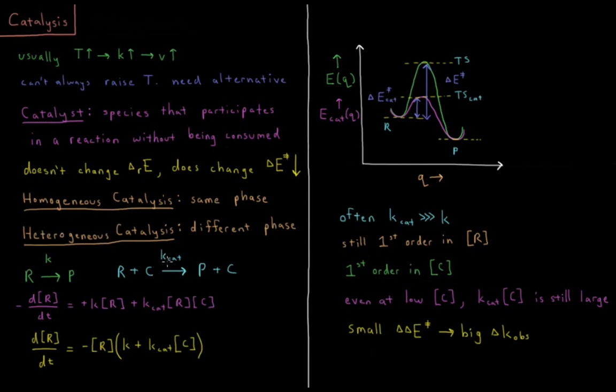So let's look at how this affects the rate when we have this alternative pathway. So our reaction rate, which is minus d[R]/dt, change in the concentration of the reactant with respect to time, that's equal to,